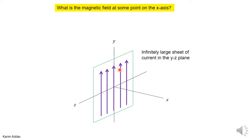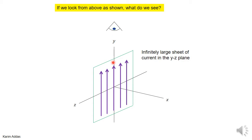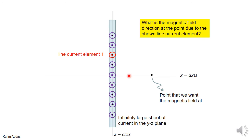We want to find what the magnetic field is at any point on the x-axis, whether the positive or negative x-axis. If you look at the problem from above, looking down, you see the XZ axes, and the sheet appears to you as just a line.